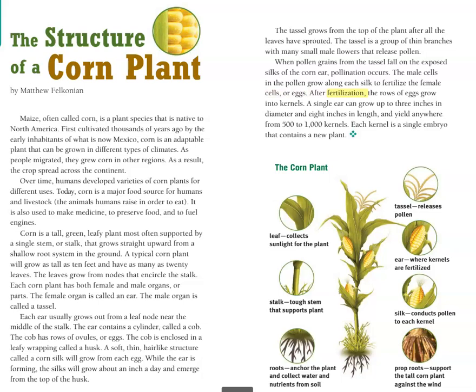After fertilization, the rows of eggs grow into kernels. A single ear can grow up to three inches in diameter and eight inches in length, and yield anywhere from five hundred to a thousand kernels. Each kernel is a single embryo that contains a new plant.